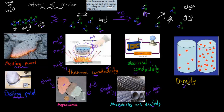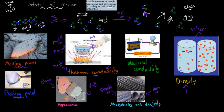Density refers to how much of a substance we can find per given volume. If you have two containers of the same volume, one might have five particles and the other twenty — the one with twenty has higher density. So these are the physical properties: melting point, boiling point, appearance, thermal conductivity, electrical conductivity, malleability, ductility, and density.